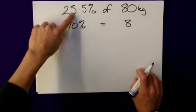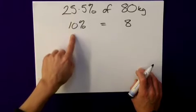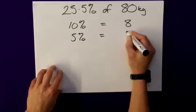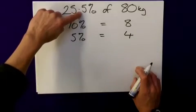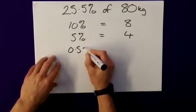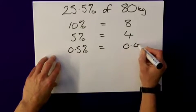Now, I'm going to need a 5 in here somewhere, 5%. That must be half of this. 5% must be equal to 4. Now, we need a 0.5%. Well, this is going to help me. So, 0.5% must be equal to 0.4.